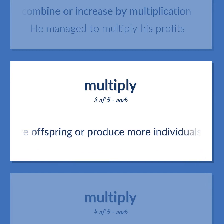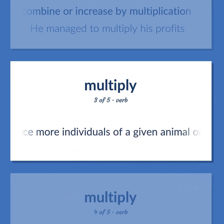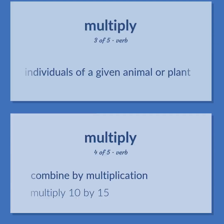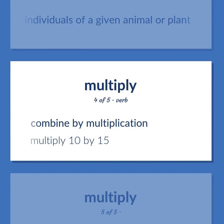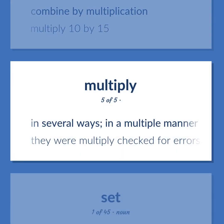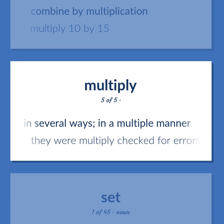Multiply: Have offspring or produce more individuals of a given animal or plant. Combine by multiplication. Example: Multiply ten by fifteen. In several ways, in a multiple manner. Example: They were multiply checked for errors.